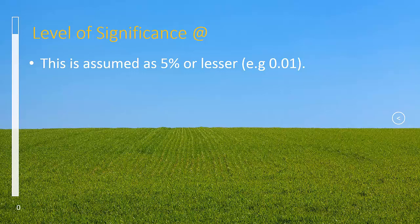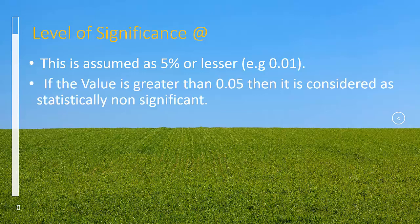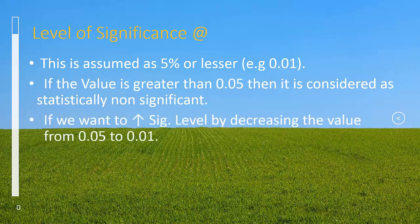Now, remember the following points. If the value of alpha is greater than 0.05, then it is considered as statistically non-significant.